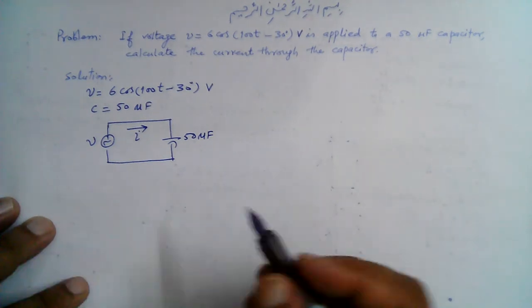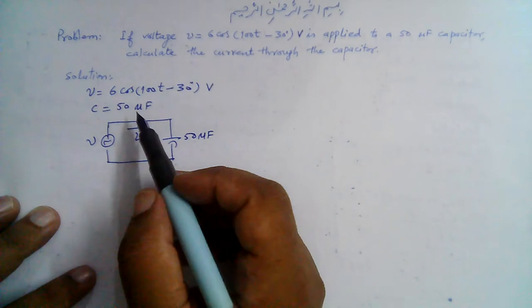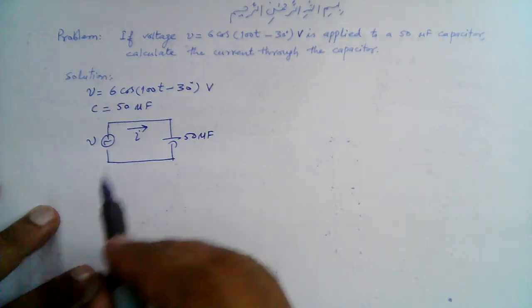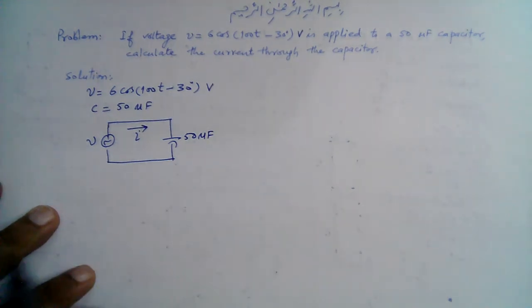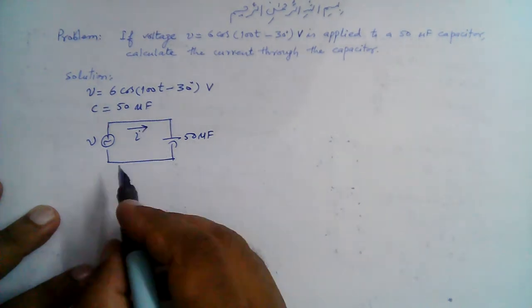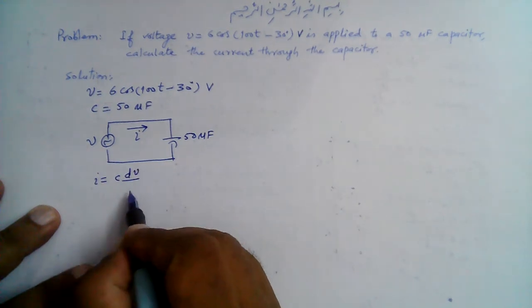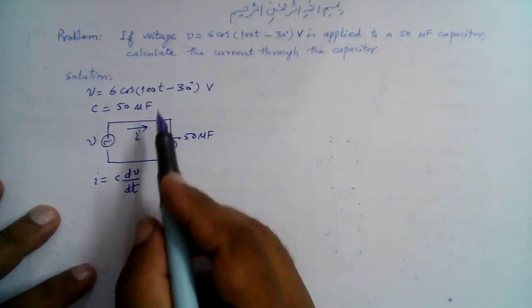We can solve this circuit in the time domain, but we can also transform this voltage into the phasor domain, then find the phasor current, and then transfer it back to the time domain. If we want to calculate the current in the time domain, we can simply use this relationship: I = C dV/dt.